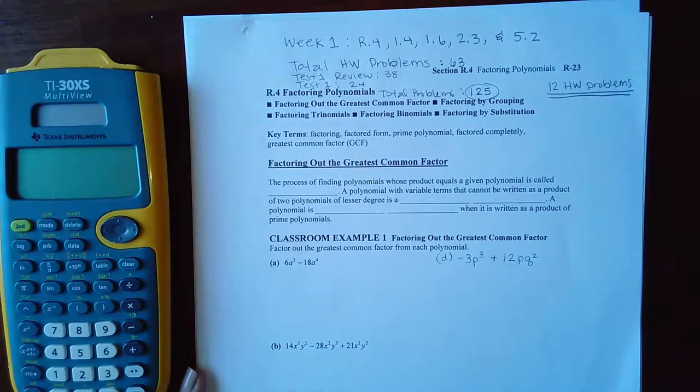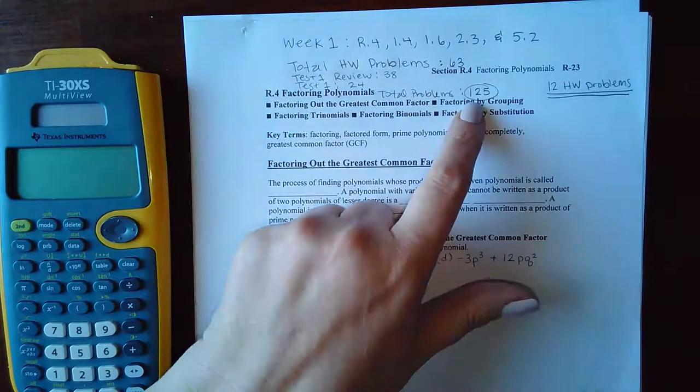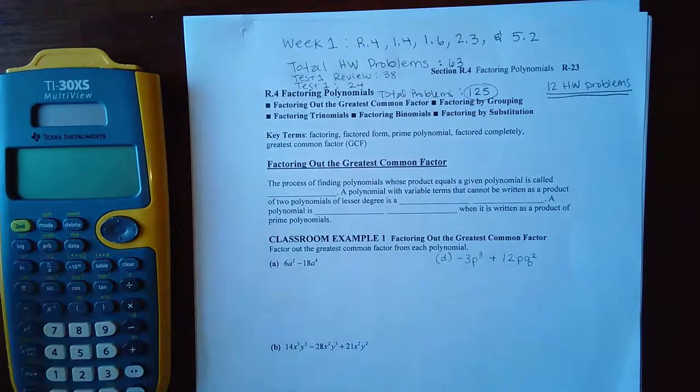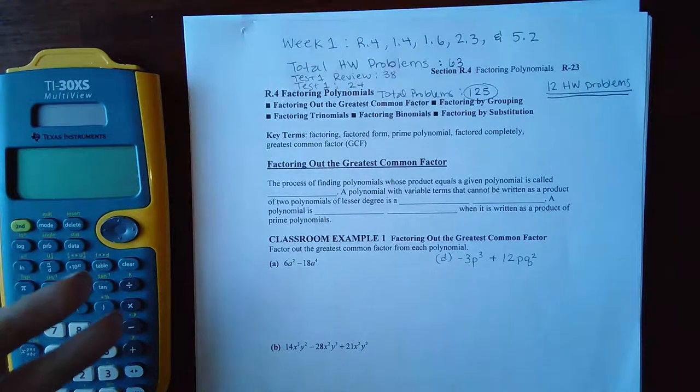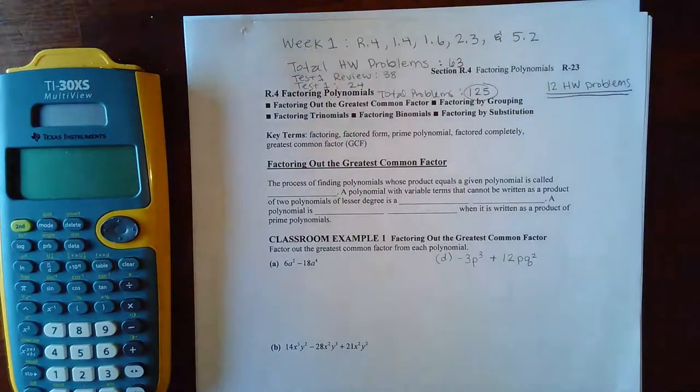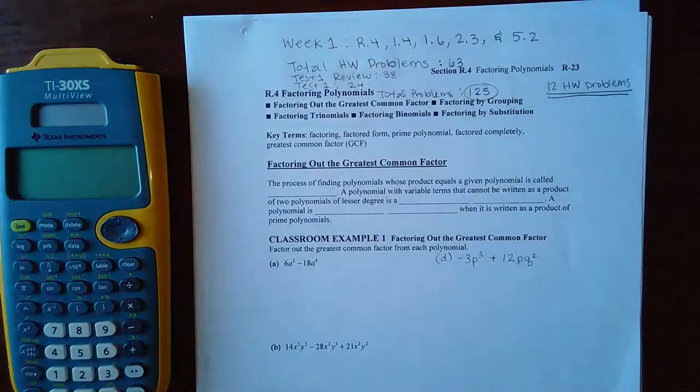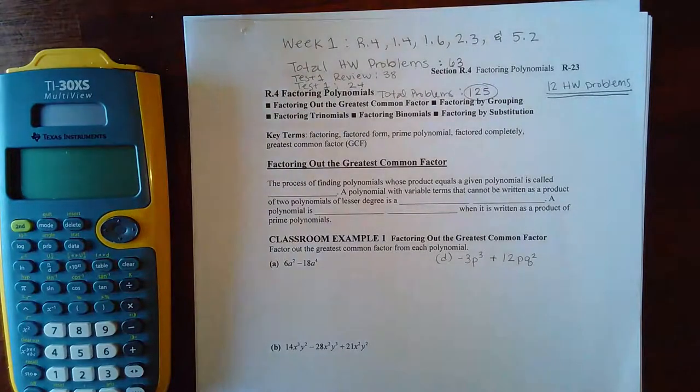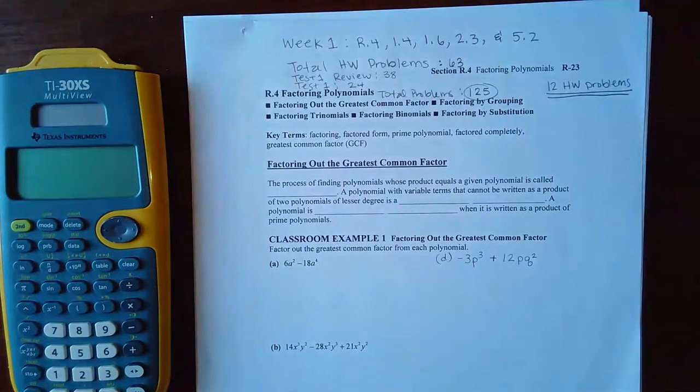This first week we have a total of 125 problems that you'll need to do. For week two, there's 127 problems that will need to be done. And then in week three there's 178 because that includes not only the third unit but also the review for the final exam and the final exam itself.